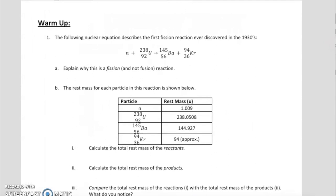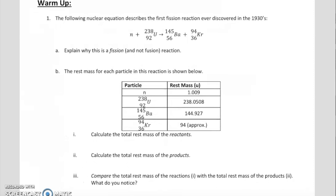Let's zoom in here to problem number one. We are given this reaction — this is a fission reaction, actually the first ever discovered fission reaction, discovered back in the 1930s. That's less than a century ago. As you're studying nuclear and atomic physics, you can just imagine how recent this really is in our history of understanding science. Part A says explain why this is a fission reaction. The best way to see that is to look at what you begin with versus what you end with. We began with uranium-238 and it split into barium-145 and krypton-94. So we're seeing the splitting action happening, and that splitting is an indication of a fission reaction.